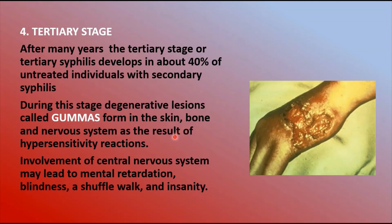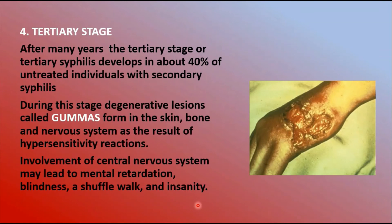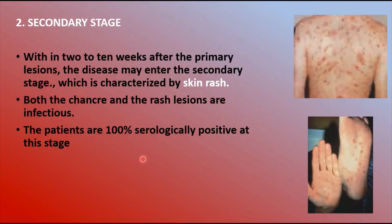In the tertiary stage, after many years, tertiary syphilis develops in about 40% of untreated individuals with secondary syphilis. Degenerative lesions called gummas form in the skin, bone, and nervous system as a result of hypersensitivity reactions. Involvement of the central nervous system may lead to mental retardation, blindness, a shuffling walk, and insanity.